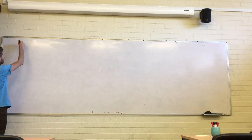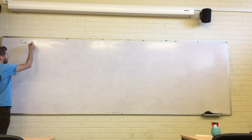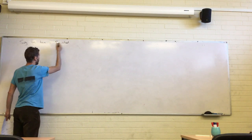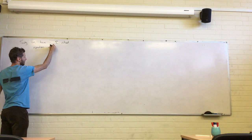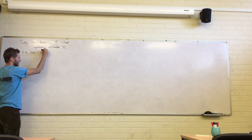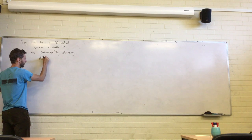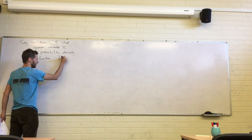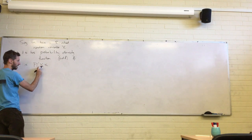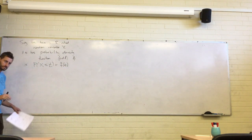So what do we want to say? Let's say you have some real-valued variable x. We say it has a probability density function — I'm going to call it just PDF. If the probability of getting a variable less than some parameter t is given by this integral.